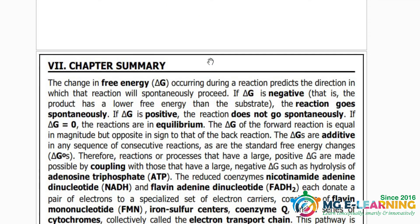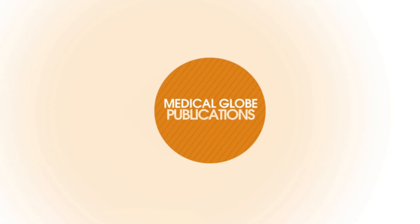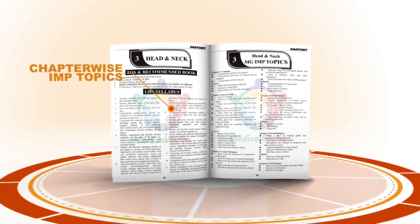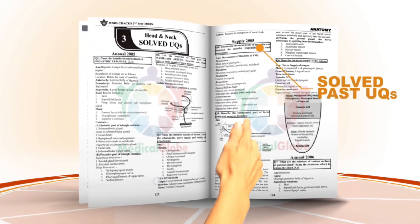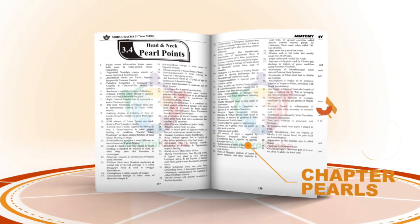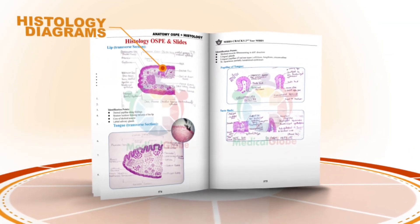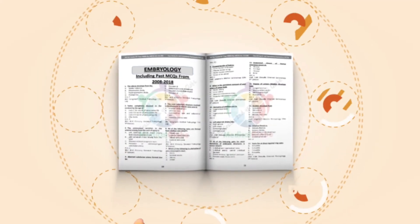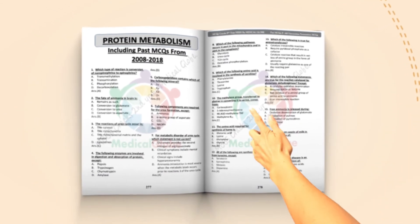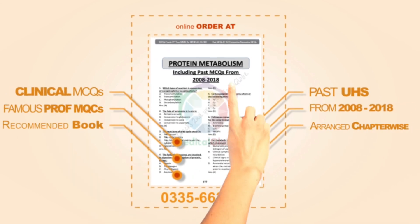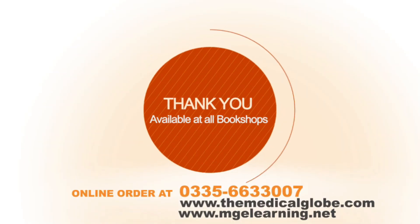Our chapter is complete. For better preparation of the professional exam you can avail services from Medical Globe book MBBS Cracks. This book contains chapter-wise important topics along with solved past university questions and important viva questions. Chapter pools, histology diagrams, OSPY model pictures are also included. We have also introduced MCQs Cracks, containing MCQs from UHS and several other universities. Order at your doorstep by calling 0335-6633007.